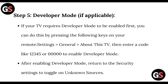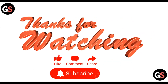Step 5: Developer Mode — applicable if your TV requires developer mode to be enabled first. Go to Settings, then General, then About This TV. Enter a code like 12345 or 0000 to enable developer mode. After enabling developer mode, return to the Security settings to toggle on Unknown Sources.